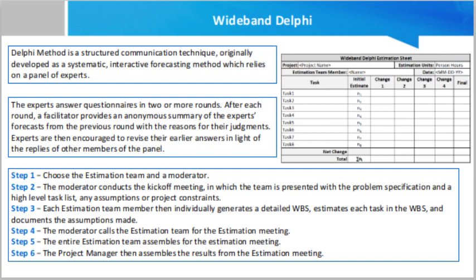Step 3 — each estimation team member individually generates a detailed work breakdown structure, estimates each task in the work breakdown structure, and documents the assumptions made. Step 4 — the moderator calls the estimation team for the estimation meeting. If any team members respond saying their estimates are not ready, the moderator gives more time and resends the meeting invite.